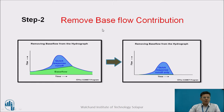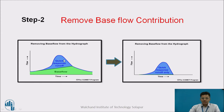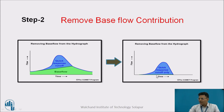Step 2 is to remove the baseflow contribution. The total streamflow at a gauging station always includes baseflow — that is, groundwater contribution — as well as quick response runoff. We should be able to separate this quick response runoff from the baseflow. After removing the baseflow from the hydrograph, what remains is the quick response runoff only with respect to time, and this is ultimately what determines the unit hydrograph.